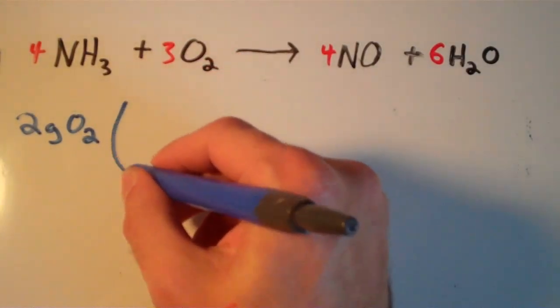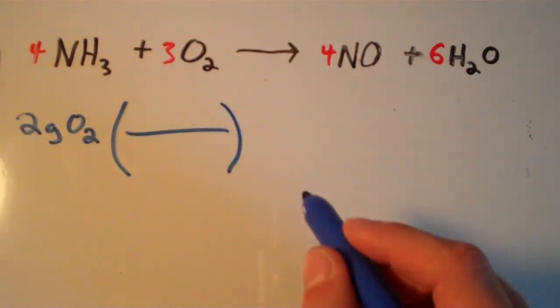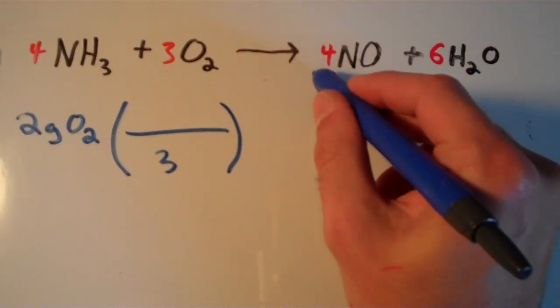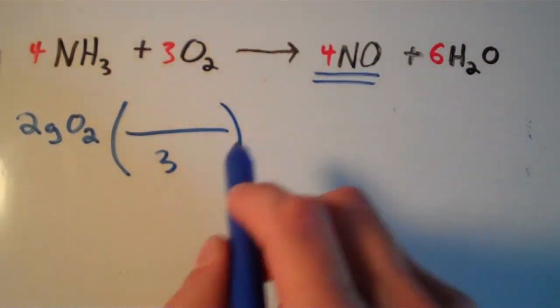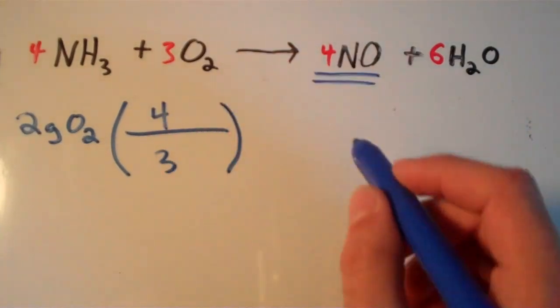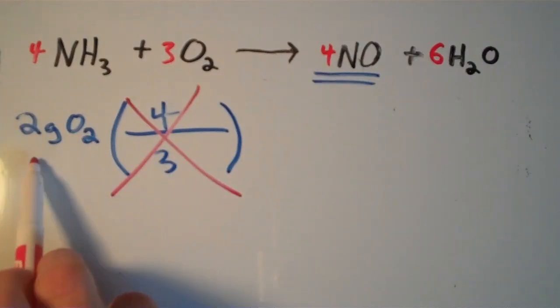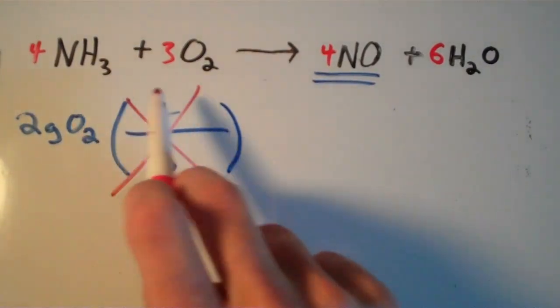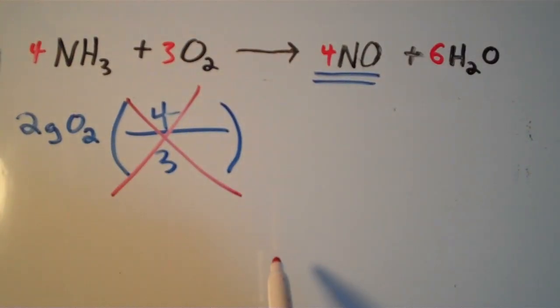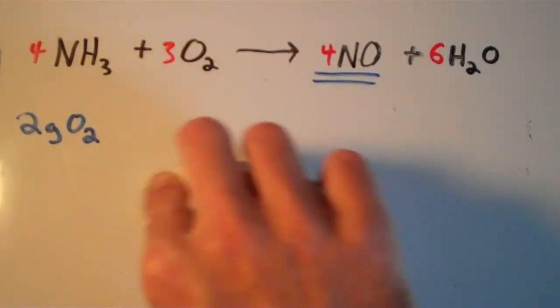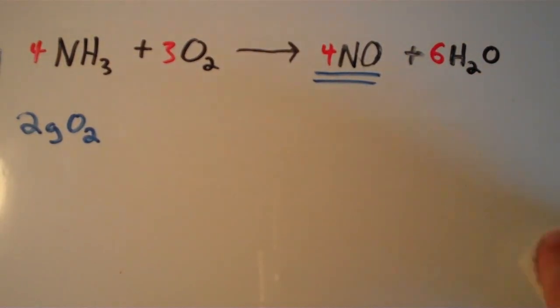One thing that you might be tempted to do is set up a conversion factor and put 3 on the bottom because that's the coefficient in front of oxygen, and if I want to calculate the mass of NO, then I'll put 3 on the bottom and 4 on top. But remember, this balanced chemical equation applies only to moles. It does not apply to mass. So if you're given a mass, you cannot use the coefficients in front of your molecules to carry out a mass to mass conversion. There's 2 extra steps involved. Mass to mass conversions are slightly harder, or slightly more tedious than mole to mole conversions. They just involve a different step.